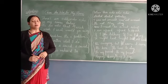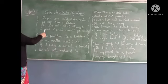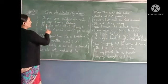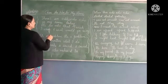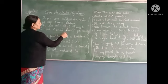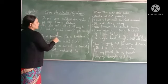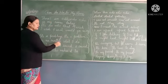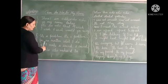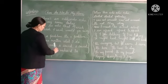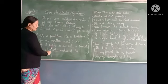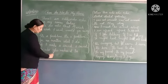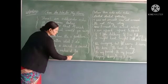Now let us read this poem once. 'There is an echo, echo, echo in my room today. It's an echo that I wish, I wish, I wish could go away. It's a problem, it's a problem, for no matter what I do. If I make a sound, a sound, the echo, echo makes it too.'